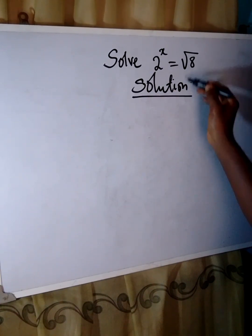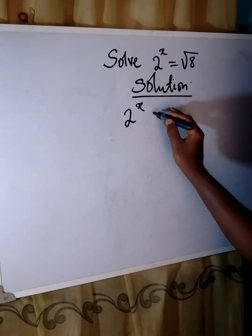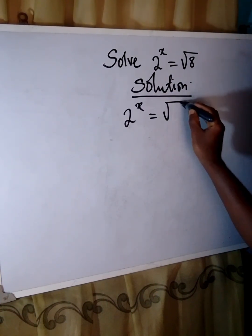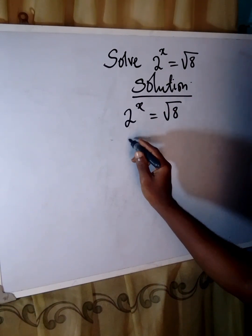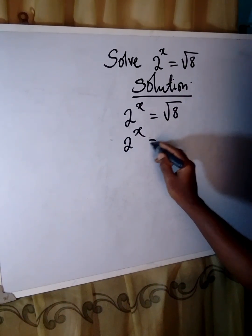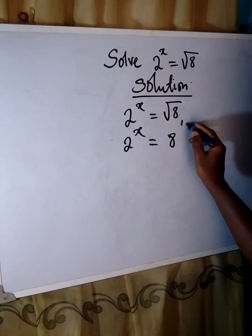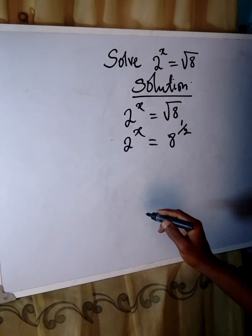Solution. Okay, we have 2 to the power of x equals square root of 8. And we know that square root of 8 is the same thing as 8 to the power of 1 over 2. Right?